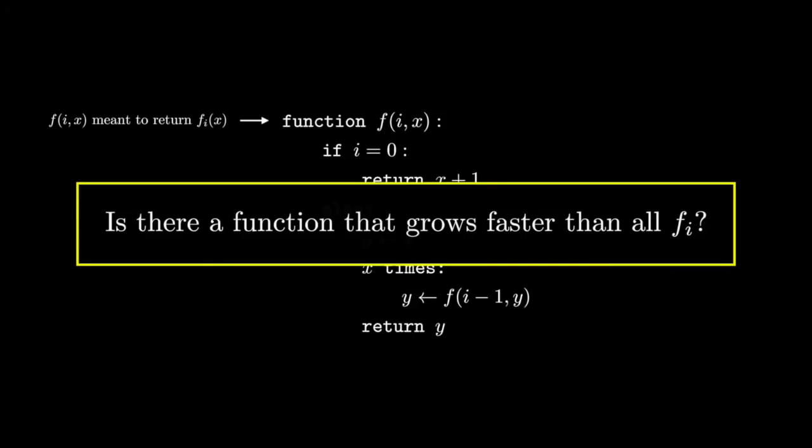A function g grows faster than a function f if at some point it becomes larger than f and stays larger. So maybe g starts off smaller than f, but for inputs larger than 100, g is larger than f. Then we say that g grows faster than f. We will now see that there is a simple function g that grows faster than all the functions in our fast-growing hierarchy till now.